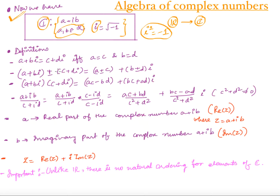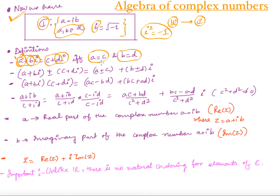Now let us define how to add, subtract, multiply, and divide two complex numbers. First: two complex numbers a plus b·iota and c plus d·iota are equal if and only if a equals c and b equals d. This is how we define the equality of two complex numbers.